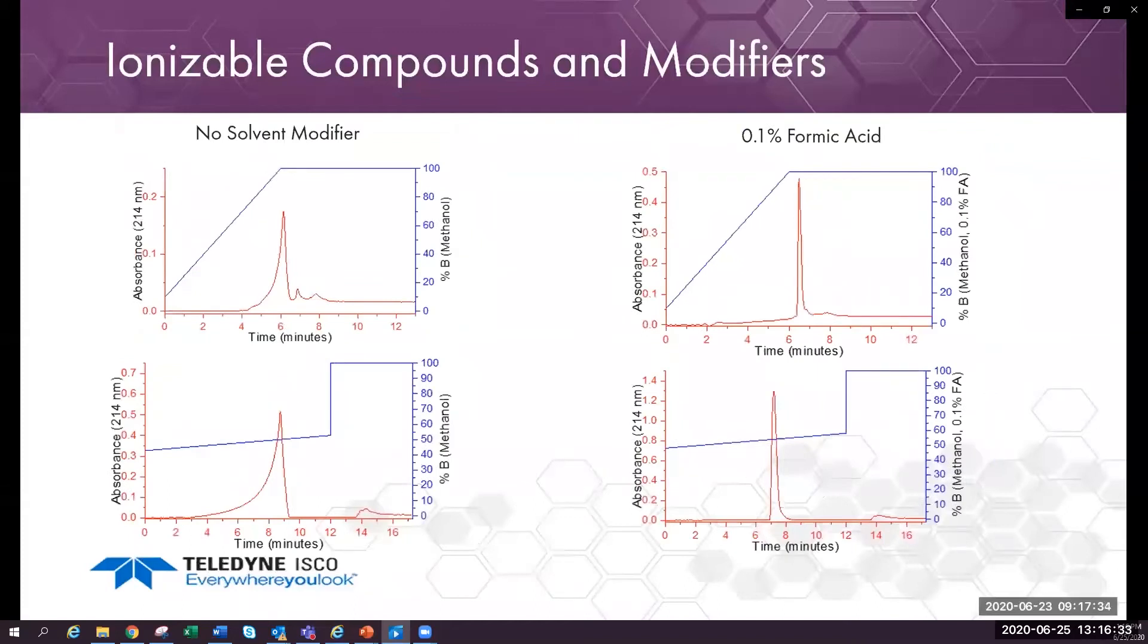Let's look at an acidic compound, salicylic acid. The scouting runs are on top. No modifier was used for the left side run. The solvent system was water methanol for all runs, but the runs on the right is 0.1% formic acid in both solvents.